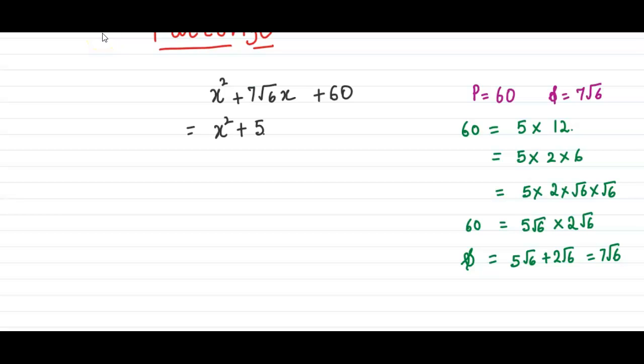x square plus 5 under root 6 x plus 2 under root 6 x plus 60. So, let's combine the first, let's group the first two terms and take x as common. So we get x times x plus 5 under root 6 in the second term. Now, here we will take 2 under root 6 common.